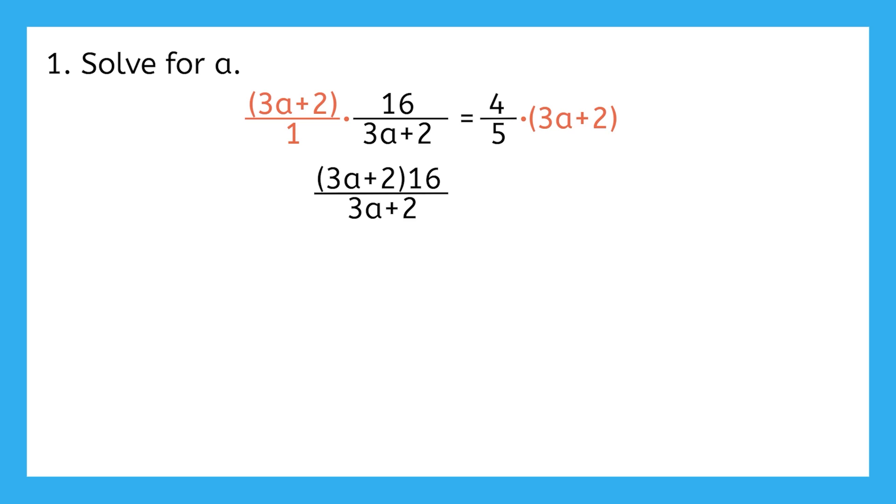We can write our numerator as 3a plus 2, all in parentheses, times 16. We can also put the 3a plus 2 in the denominator in parentheses to show that we're grouping them together. Then I can see that with a 3a plus 2 on top and bottom, they will cancel each other out to make 1 times 16 or just 16.